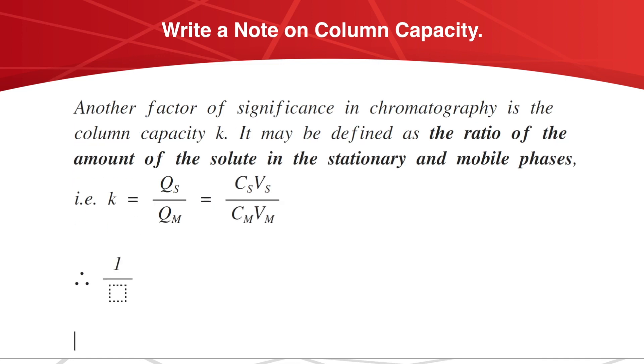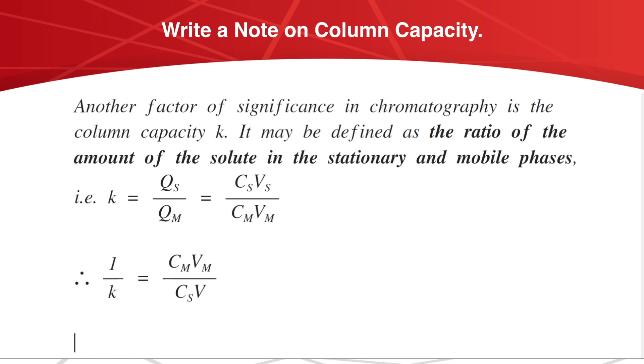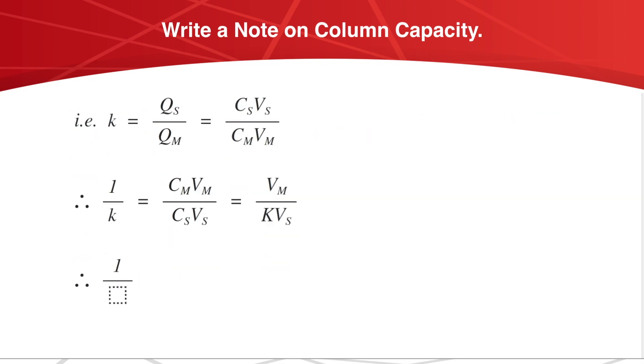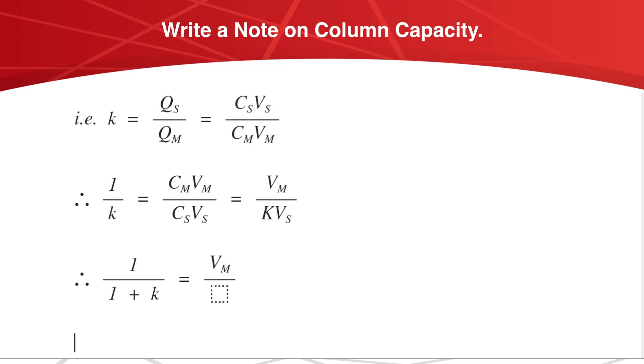On taking a reciprocal, 1 by k equals Cm Vm divided by Cs Vs, which equals Vm divided by K Vs. Or we can rearrange this equation as 1 by 1 plus k equals Vm divided by Vm plus K Vs.